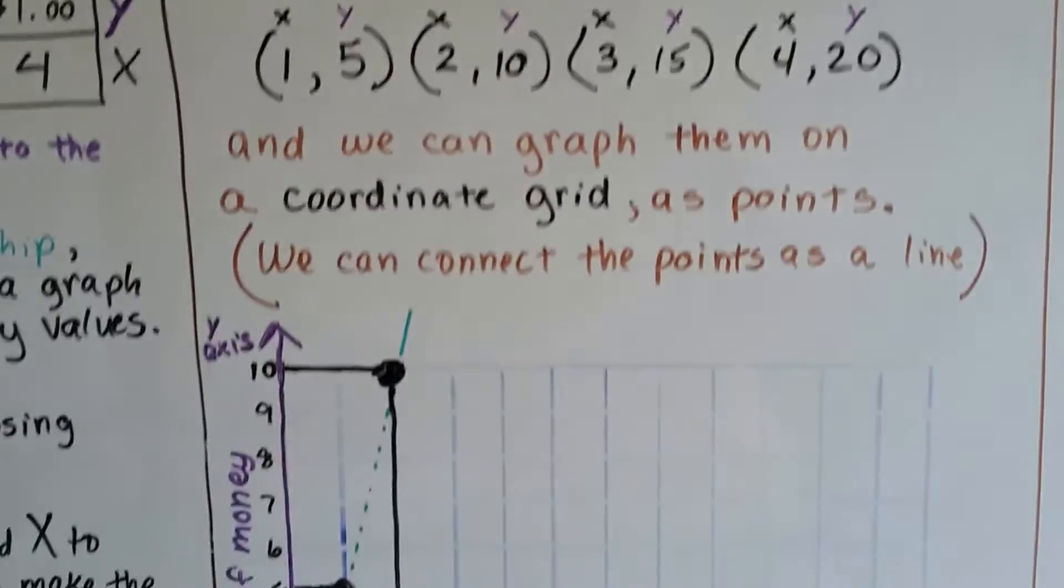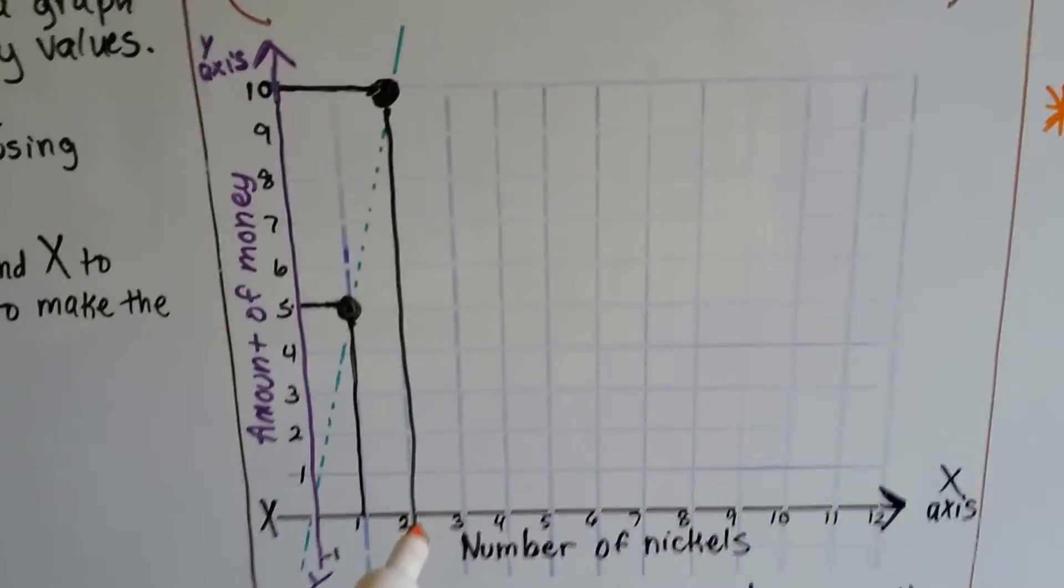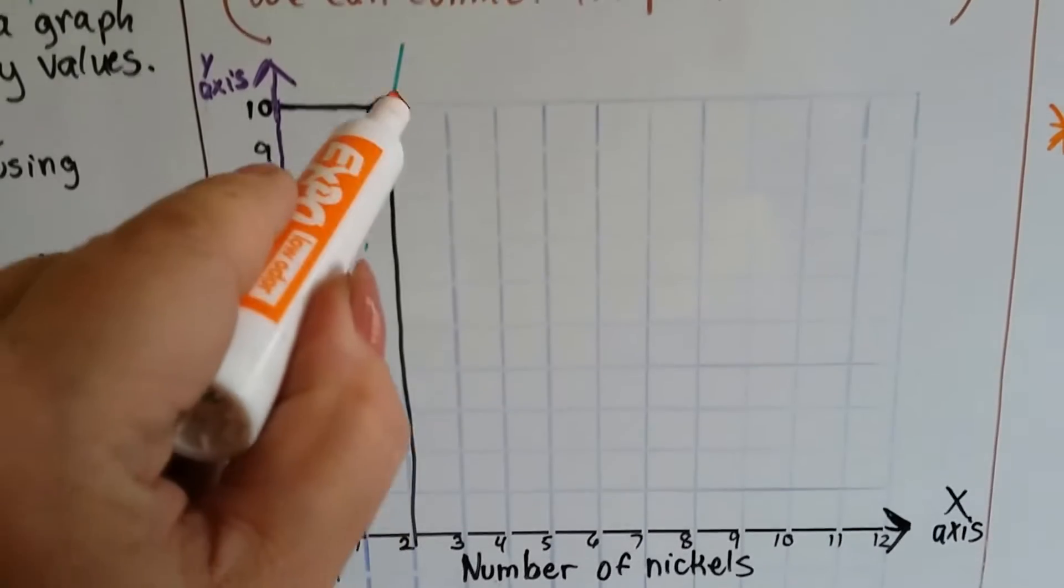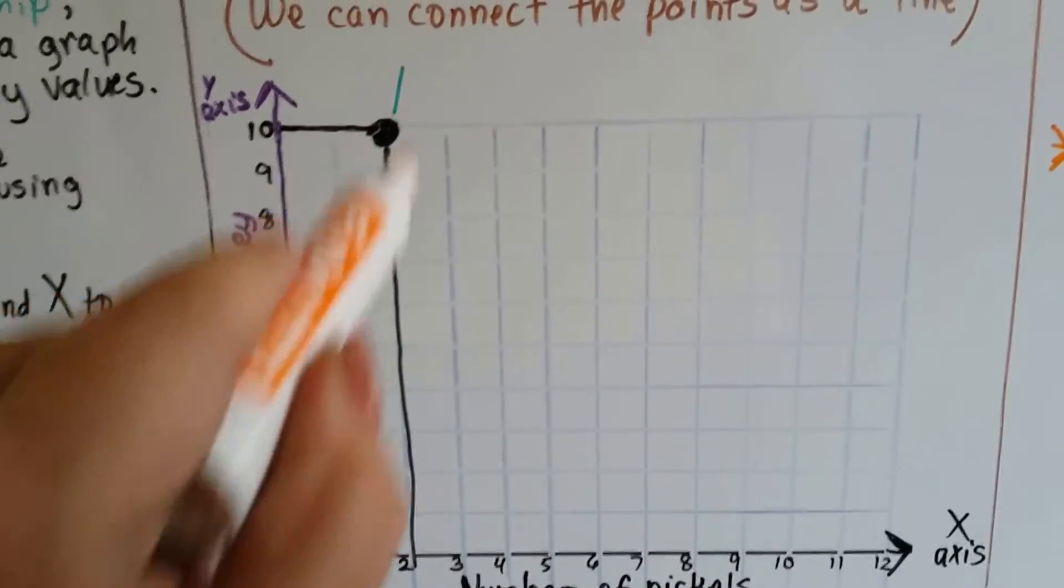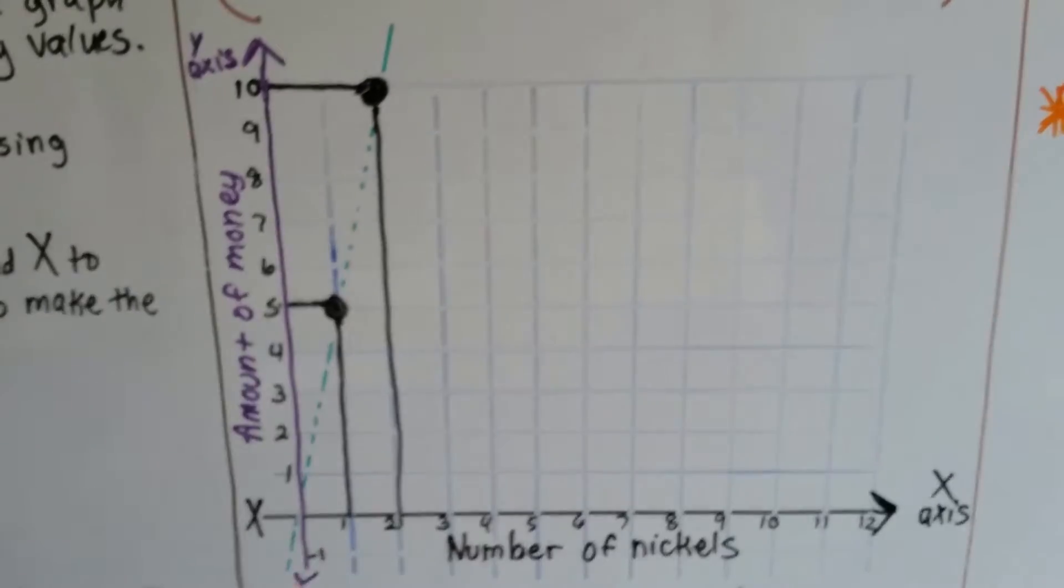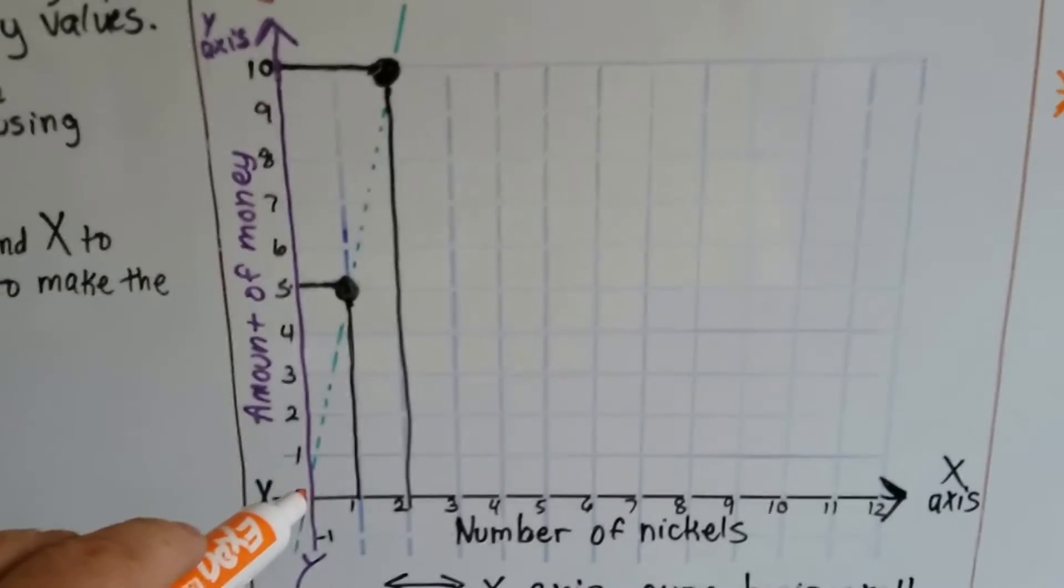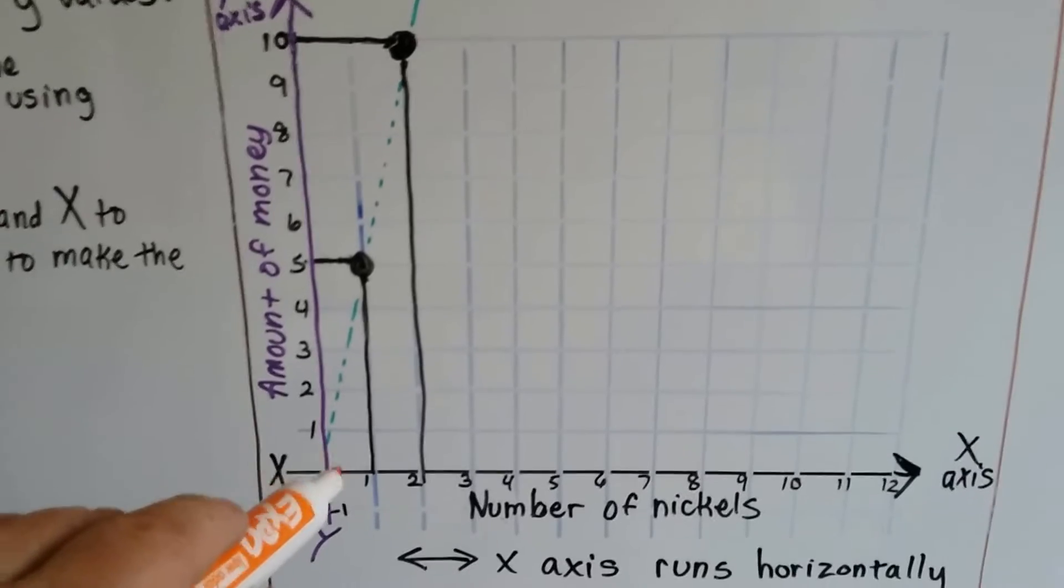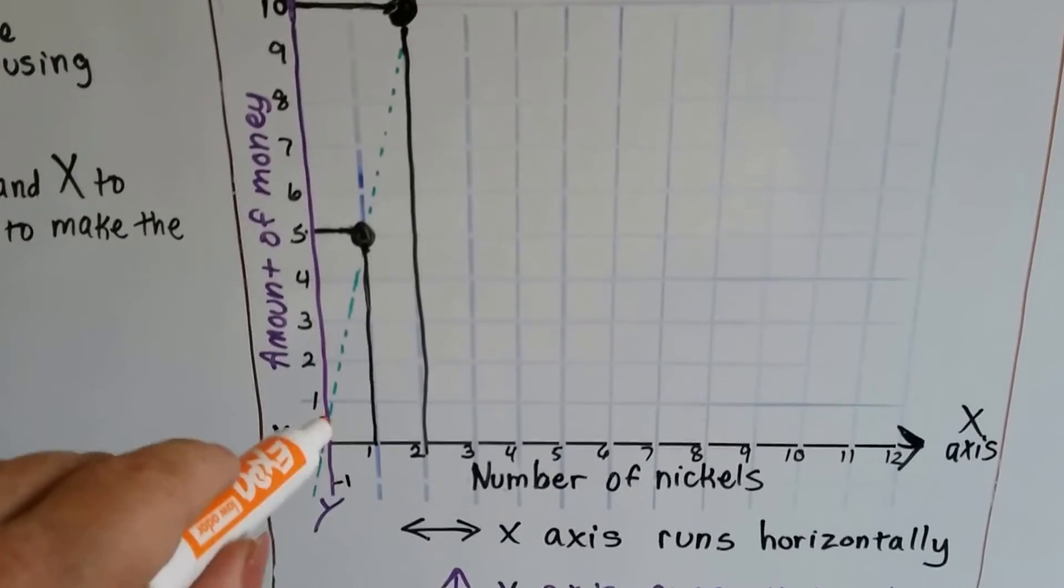The next one says 2, 10. x is 2, y is 10. So we go to 2 on the x, and we go all the way up to 10 for the y. And that's our point there. And then we can get a ruler and draw a line through them. And you can see that if we had no nickels, we would have no money, and so it would run through the 0, 0 line. That's the origin.